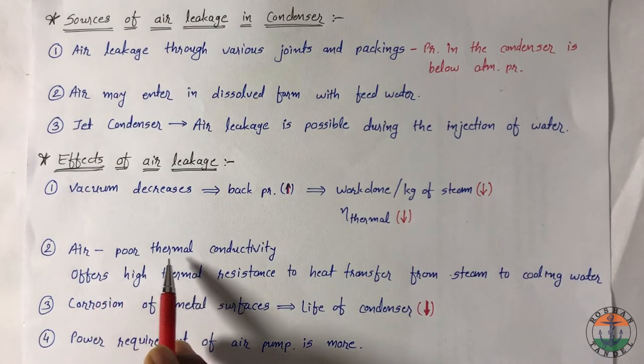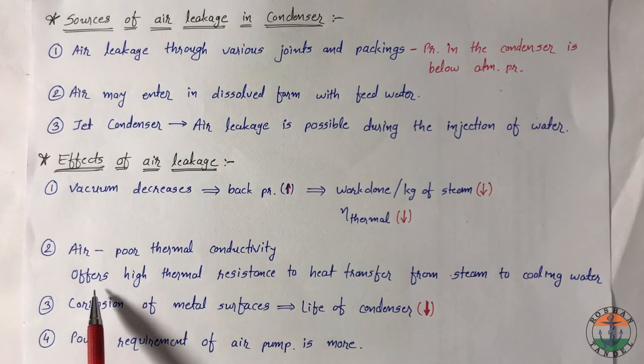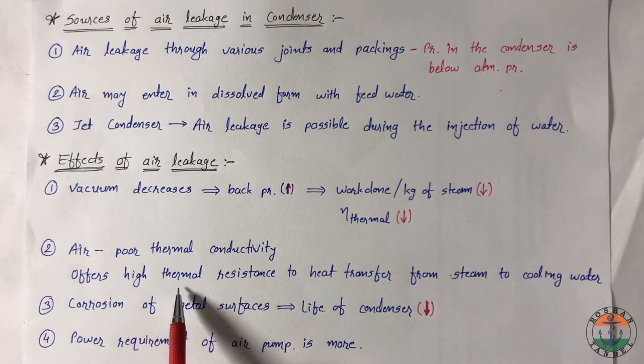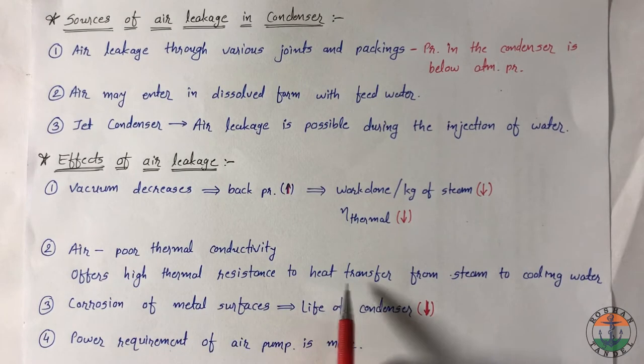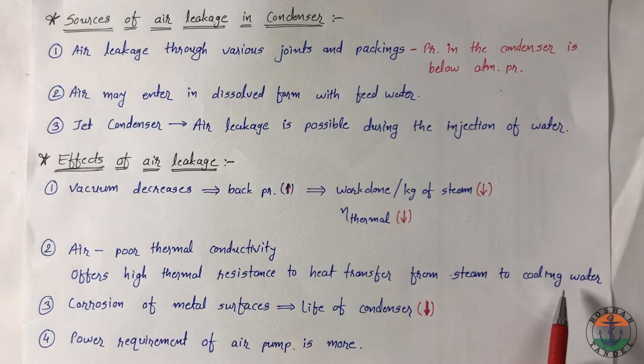Air has a poor thermal conductivity. Presence of air offers high thermal resistance, so heat transfer rate from steam to cooling water decreases. Air in the condenser causes corrosion of metal surfaces which reduces the life of condenser. To remove the air, air ejector pump is used. If air leakage is more, then power required to drive that pump is more.